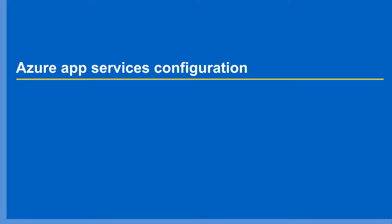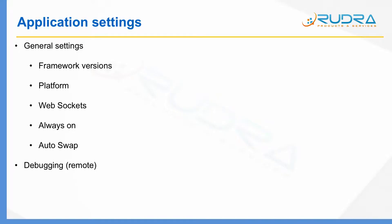So let's start going through application settings. In terms of application settings, they can be broadly divided into four areas. The first one is general settings. Under general settings, you can select different framework versions. Azure App Service supports .NET Framework, Java, Python, and PHP.